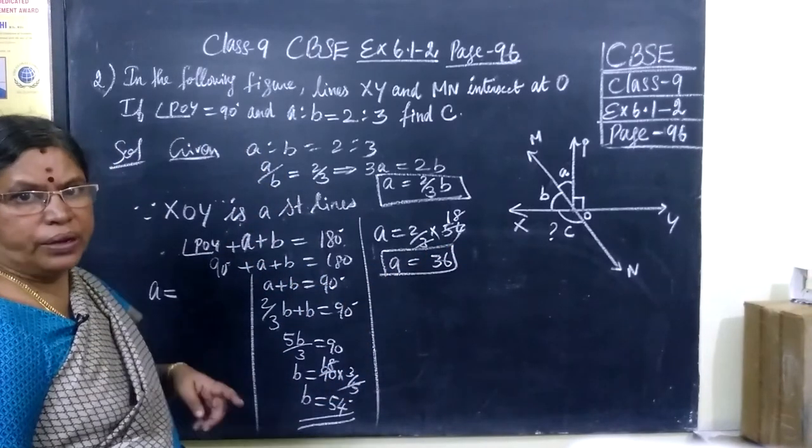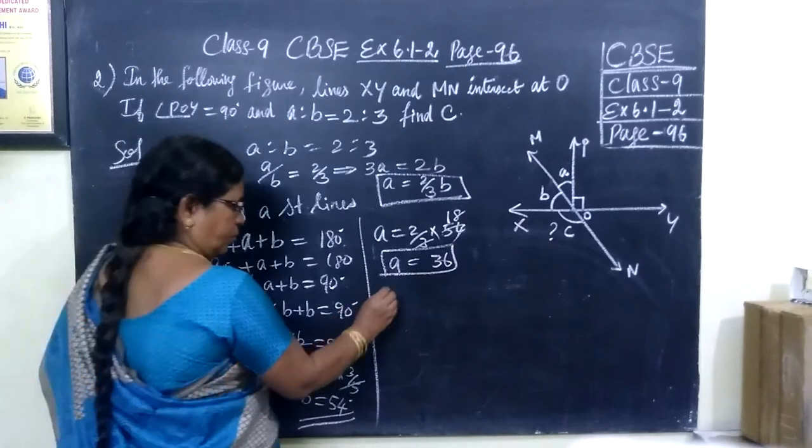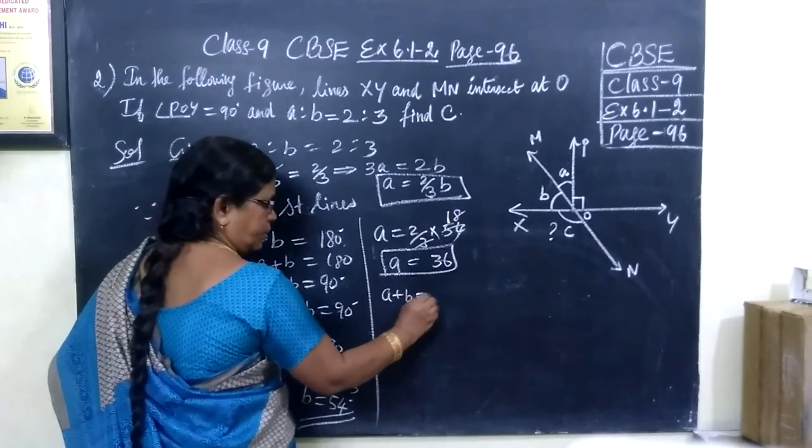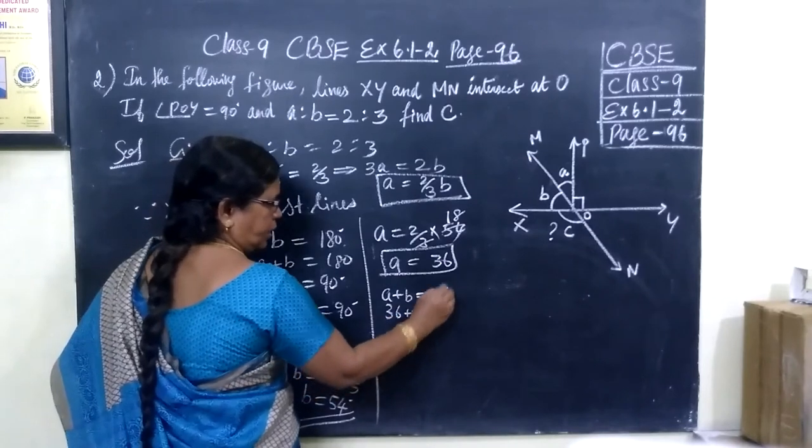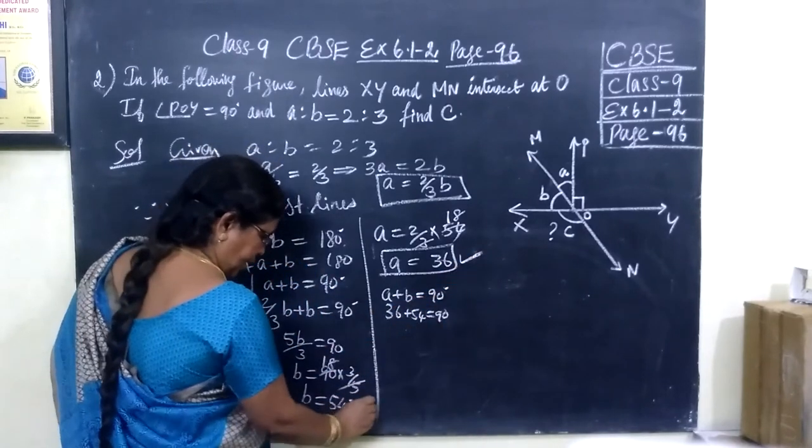You just verify, it should be equal to 90 degrees. So A plus B, this is 90. So 36, 54 is equal to 90 degrees. Therefore, A and B is correct.